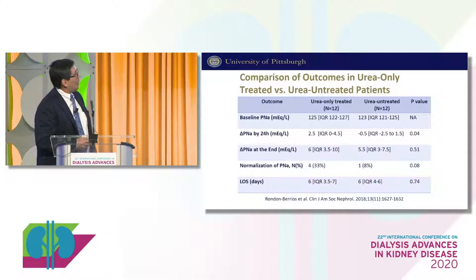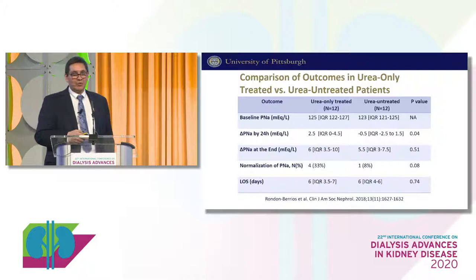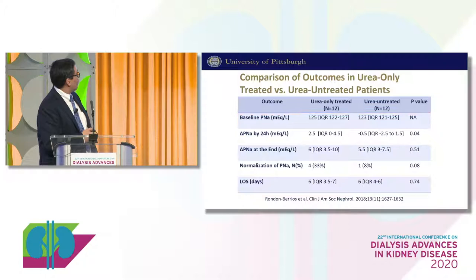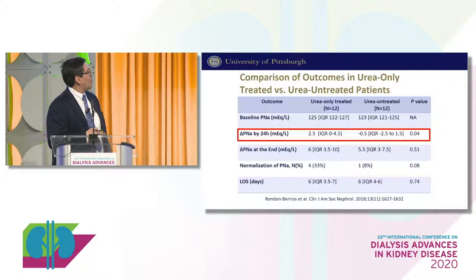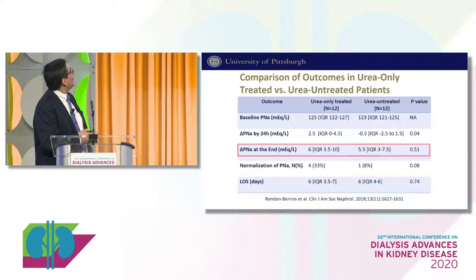When we compared our urea-treated group to a historical control group treated a year earlier without urea, baseline plasma sodiums were similar. At 24 hours, the urea group had a higher increase in plasma sodium. At end of treatment, there was no significant difference in overall sodium change, but a slight trend toward normalization in the urea group. Length of hospital stay was about the same as well.